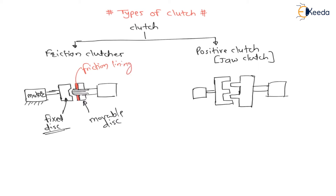We can say friction lining or friction material. Whenever this movable disc comes in contact with the fixed disc, then because of the friction material, power is transmitted. Whenever the fixed disc is rotating, this friction disc will also rotate. But whenever the movable disc moves towards the right, then the clutch is disengaged. When the clutch is disengaged, the fixed disc is moving with omega, but the movable disc will move with zero speed, because now the clutch is disengaged and power transmission is stopped.